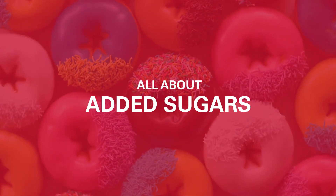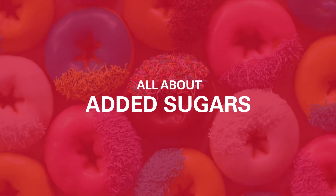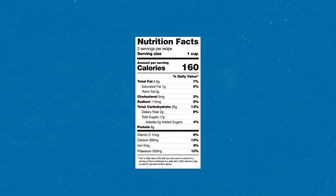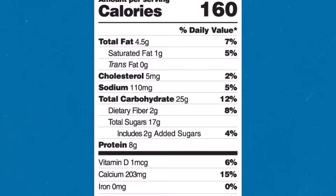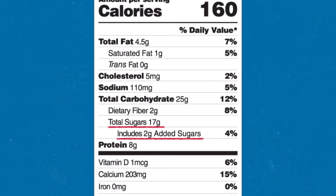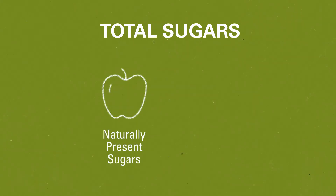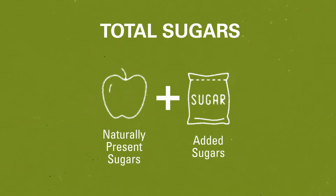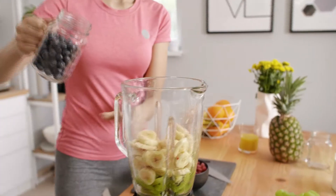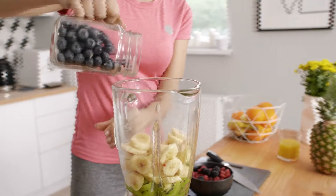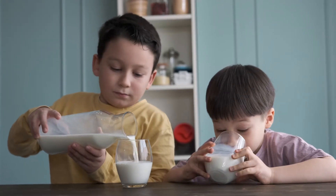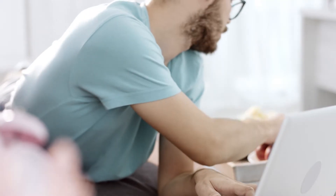All about added sugars. There are two types of sugar listed on the Nutrition Facts label: total sugars and added sugars. Total sugars include sugars that are naturally present in many foods and beverages and any added sugars that may be present in the product. Naturally occurring sugars are found in many nutritious foods and drinks such as milk and fruit.